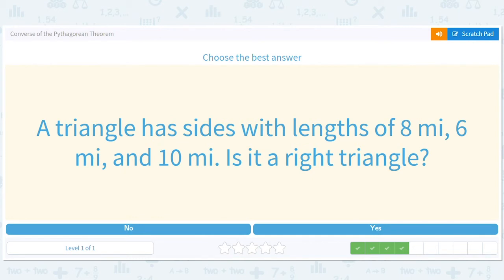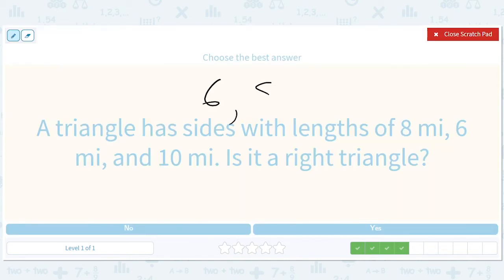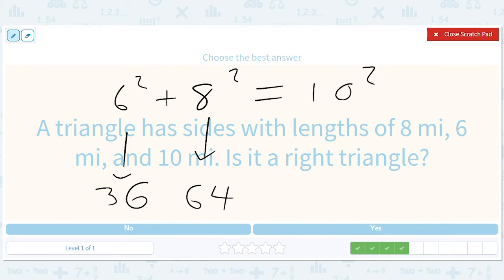Again we can immediately apply the trick here. 6, 8, 10. If we divide everything by 2 we'll get 3-4-5, so we know it's right. But let's do it with the formula. So we have 6 squared plus 8 squared. What's that? 36. What's 8 squared? 64. So does this equal 10 squared? Yes, 64 plus 36 equals 100.